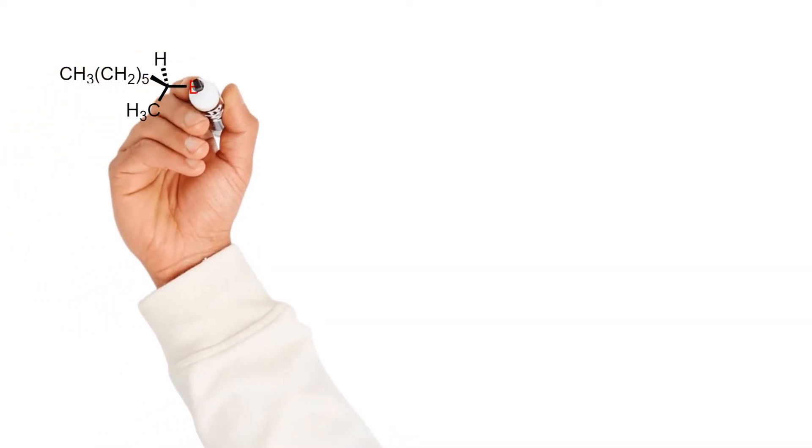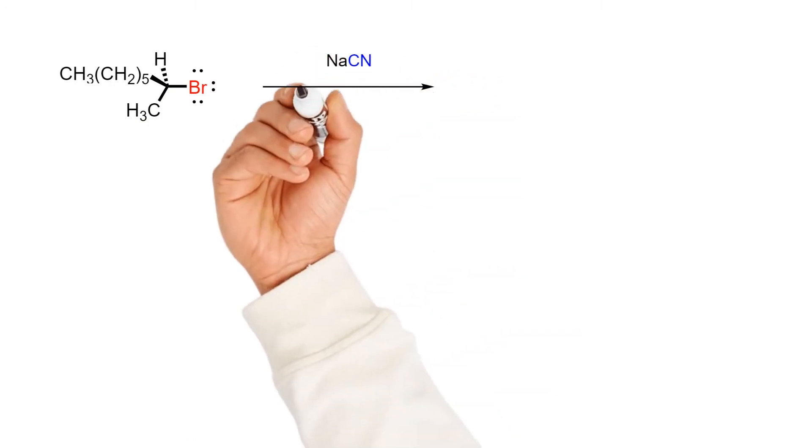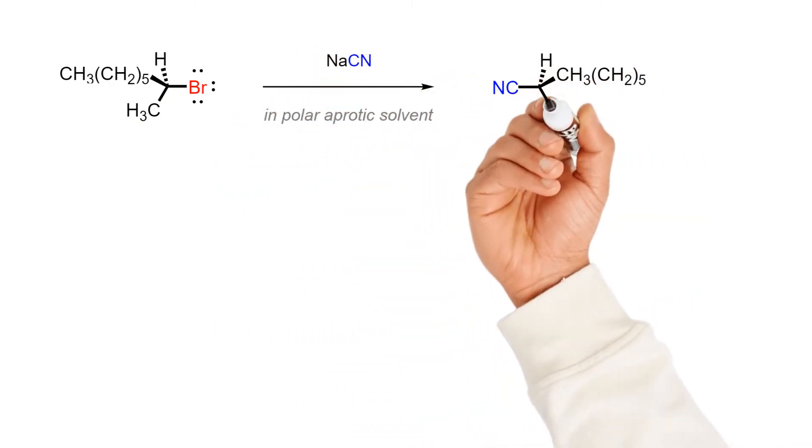When a chiral alkyl halide reacts with a powerful nucleophile such as cyanide, an inversion process occurs in which the nucleophile approaches the electrophilic carbon from the back, the opposite side from which the leaving group is breaking off, and produces a stereochemically inverted substitution product.